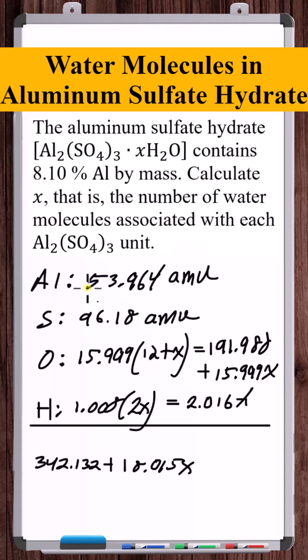Well, if we take the total mass of aluminum in one of these units, which we have, the total mass of aluminum is 53.964, and divide that by the total mass of one of these units, then because it's 8.1% aluminum by mass, we're going to get 0.081. So we just need to solve this equation for X.